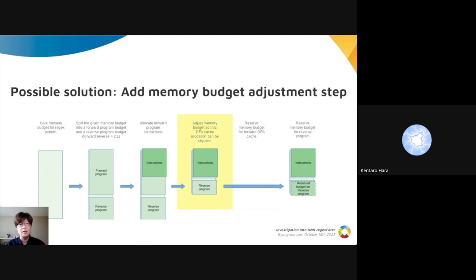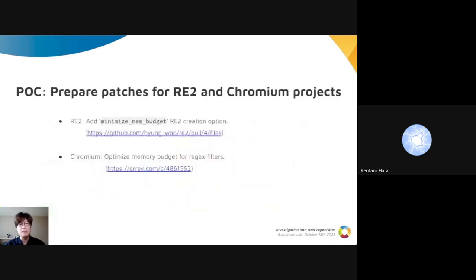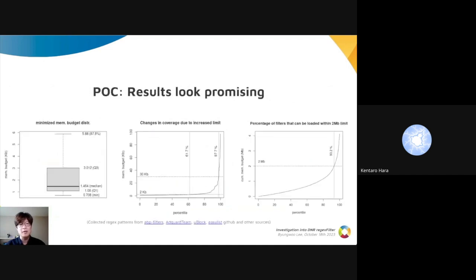This would enable Chrome to set an optimal memory budget for each regexFilter, and then we can increase the limit for each filter. To test this concept, we made patches for both the RE2 and Chromium projects. By increasing the regexFilter limit from 2 kilobytes to 30 kilobytes, we boosted the coverage from 61% to 97%.